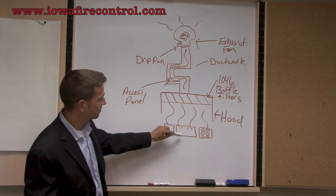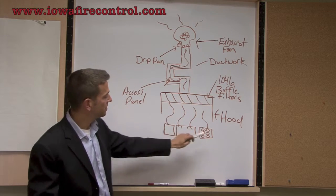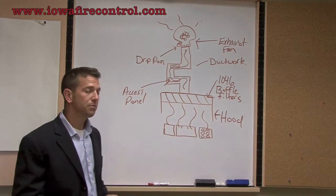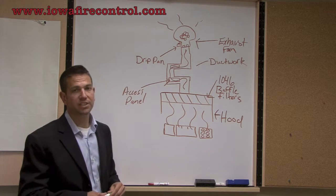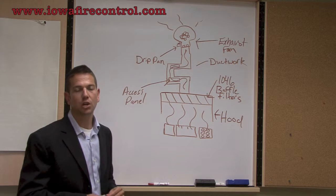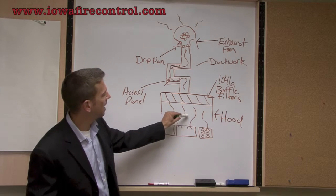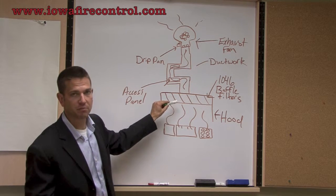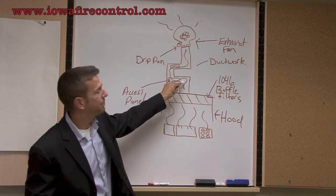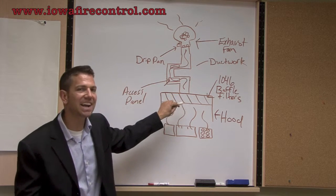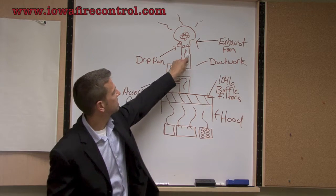What you have is these appliances creating effluent, and that effluent comes up into the canopy hood. There are many different styles of hoods, but the most obvious style is going to be a wall-mounted canopy or an island canopy hood. Many places have multiple hoods, and then the effluent goes into the ductwork. The fan pulls that effluent, that hot air and grease, up and through that system.